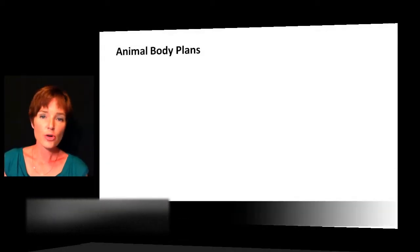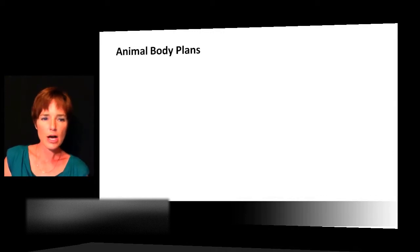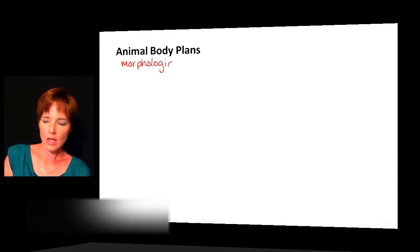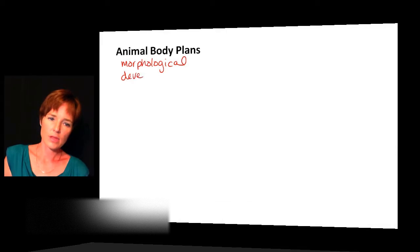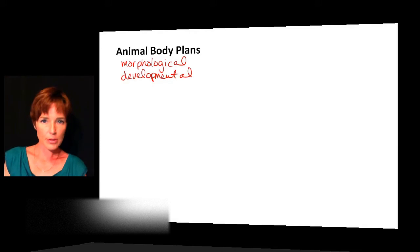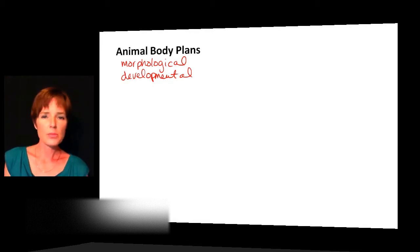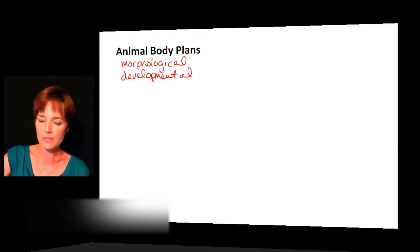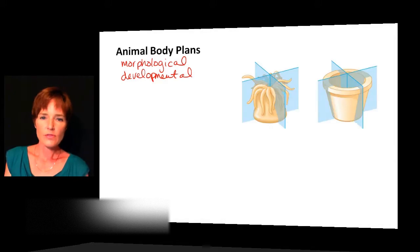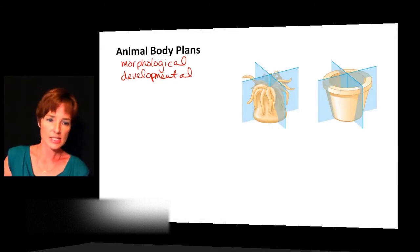Animals display a great diversity in their body plans. When we talk about body plans, we're talking about morphological characteristics and also developmental things. As we go through and start talking about these body plans, keep both of those in mind. We're just introducing them in this chapter and will discuss them more as we get to the specific phyla that display these characteristics. One thing that's very important when we start talking about body plans is symmetry.